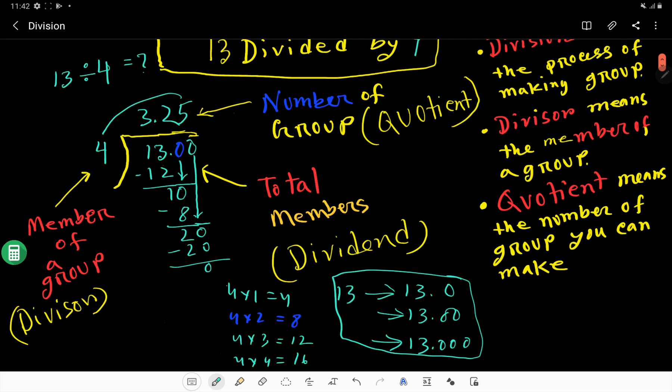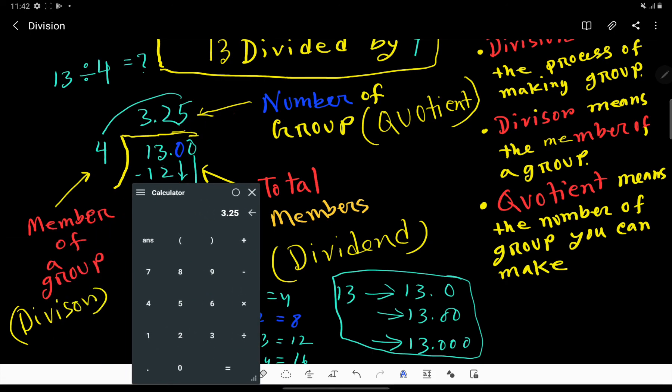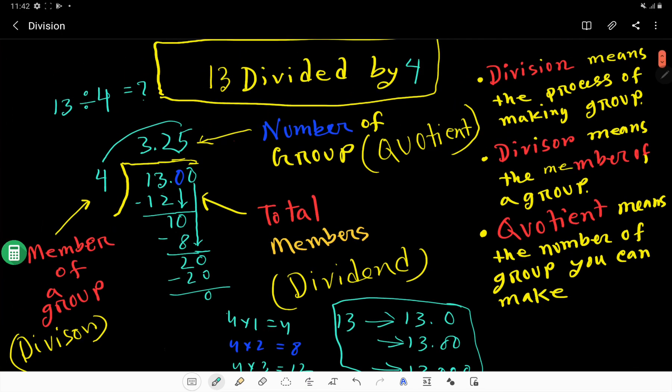If you want to express the result in decimal number, you have to write 3.25. Your calculator is saying the same. I hope you have gotten the clear idea. Thank you for viewing this video.